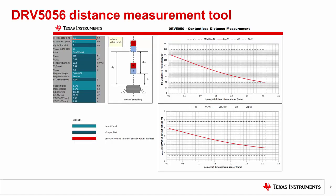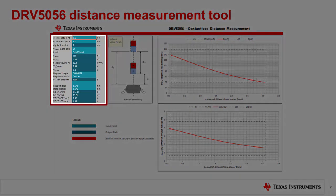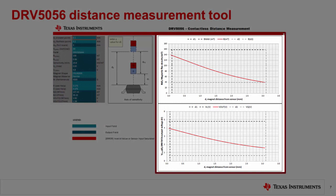In the left side of the tool, you can input all the design constraints discussed in previous slides. The magnetic flux density and DRV5056 output voltage plots on the right side update in real-time based on your inputs. This provides a fast and accurate way to optimize your distance measurement application.